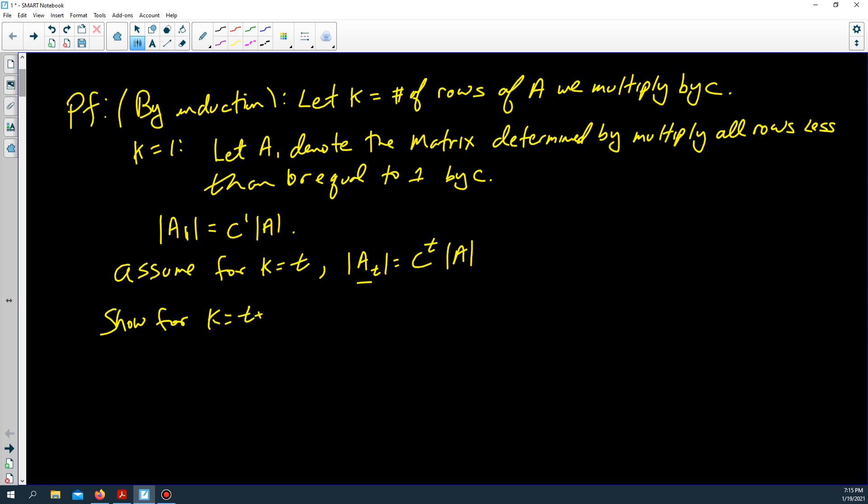Now we assume that k equals t plus 1, that the determinant of A_{t+1} is equal to c to the t plus 1 times the determinant of A.